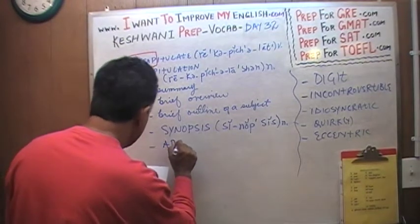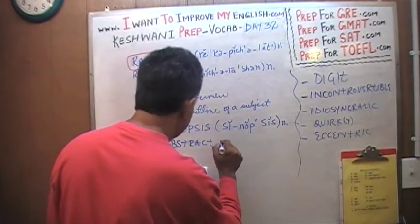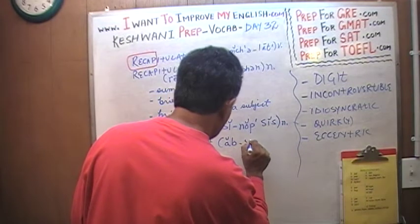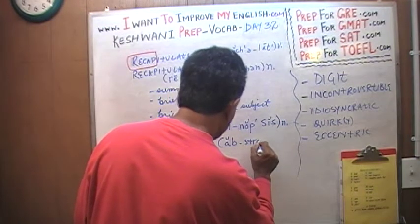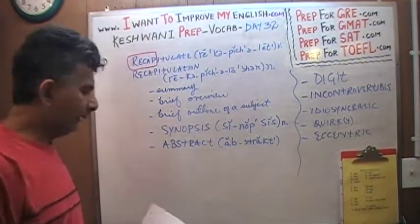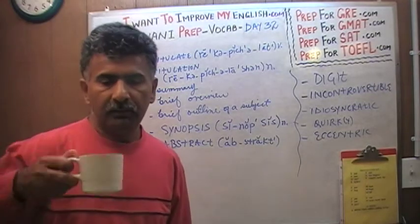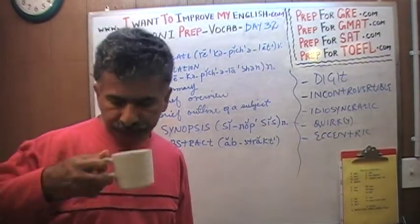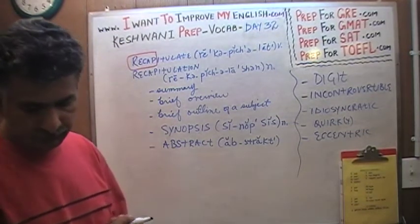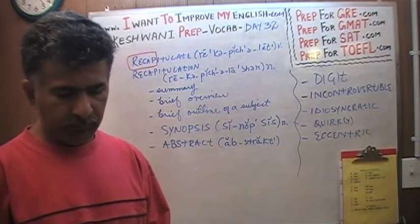And finally, the word abstract. An abstract is a synopsis; it is an outline, a summary, a brief statement, a brief overview of something — it is a recapitulation. That's all there was. Let's move on and learn a new word.